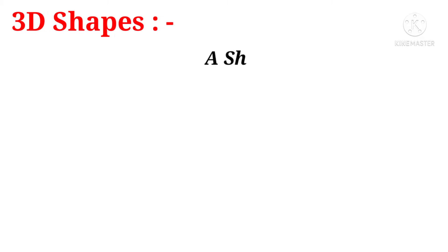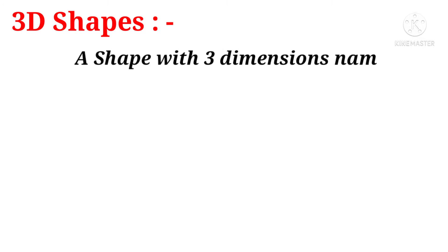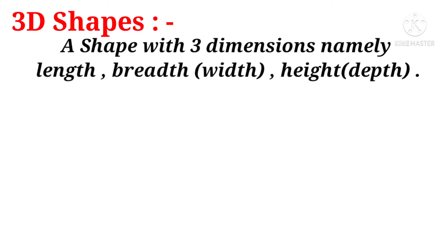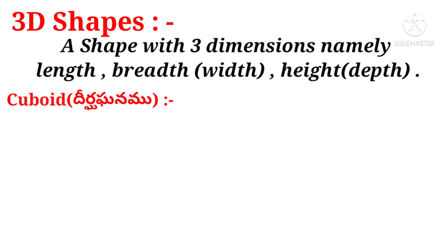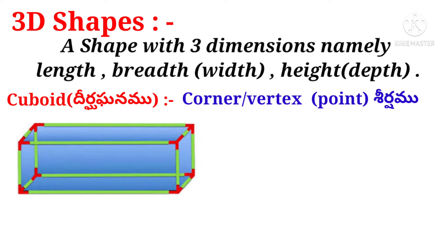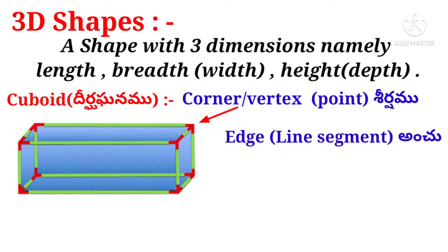3D shapes — that is, three-dimensional shapes — are shapes with three dimensions, namely length, breadth or width, and height or depth. Let us take an example: cuboid. Let us see the picture of a cuboid. Now we have to find out how many corners there are. Corners are nothing but vertices, and how many edges there are — the line segment joining the corners is called edges.